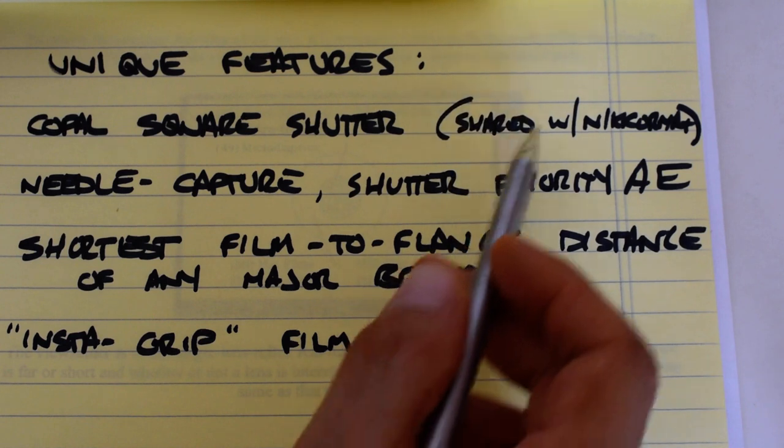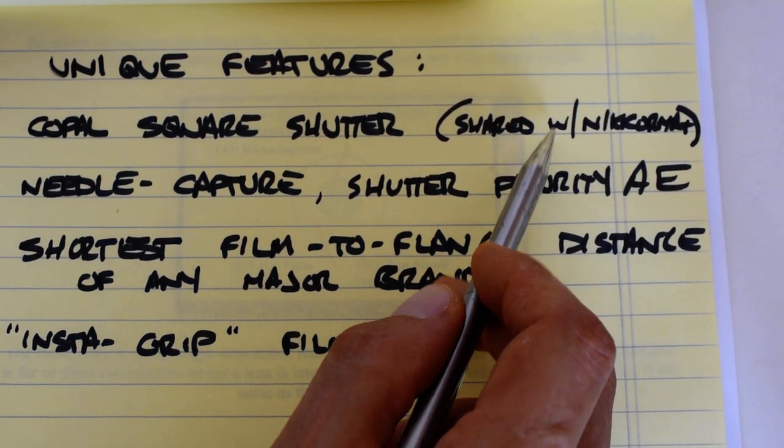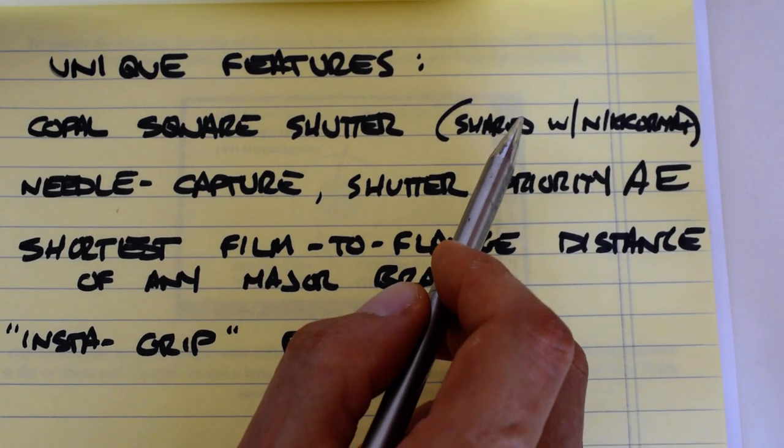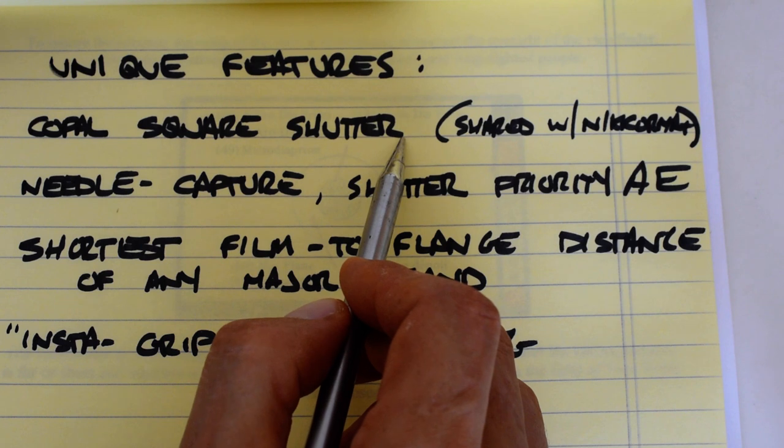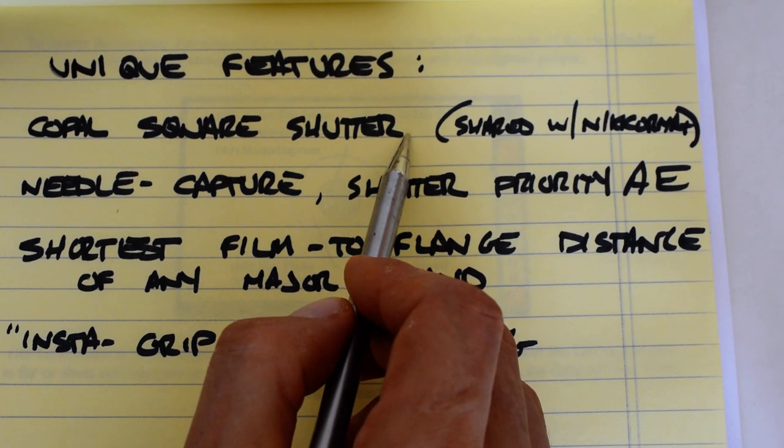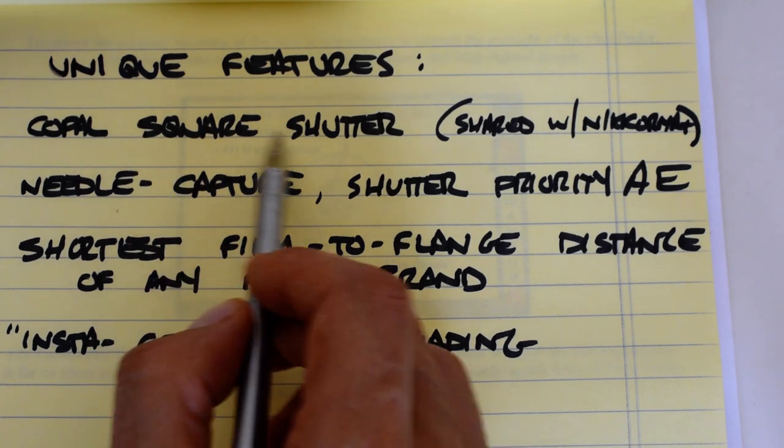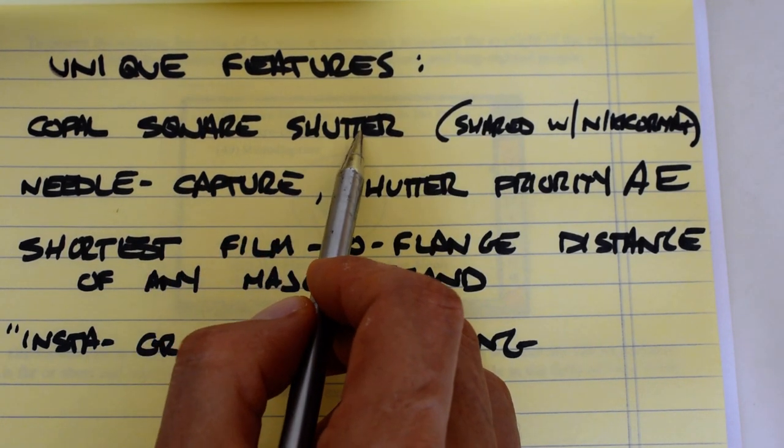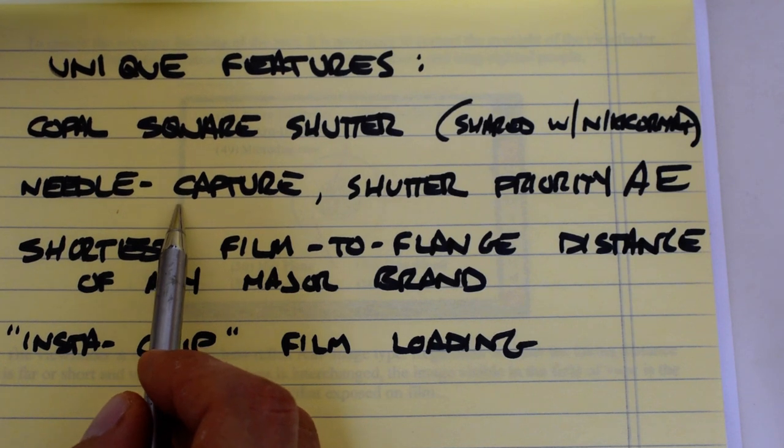Possibly I think there may have been some M42 mount SLRs which were metal bodied and had a Copal square shutter, possibly made by Cosina. I'm not entirely certain. Anyway, but the Copal square shutter is a standout feature on the Autoreflex.